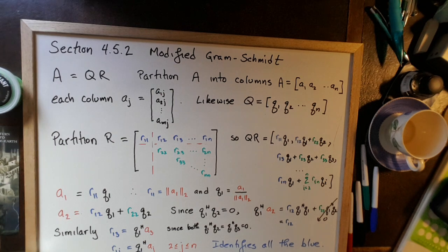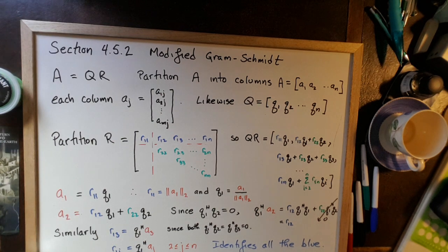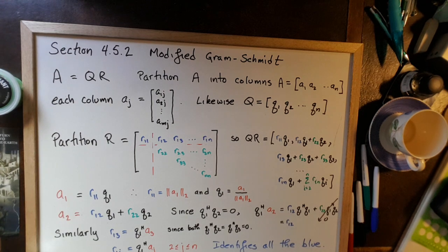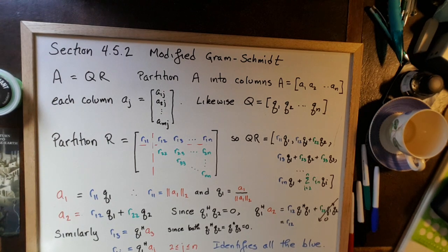All right, let's look at section 4.5.2, the modified Gram-Schmidt algorithm for computing the QR factoring of a matrix.